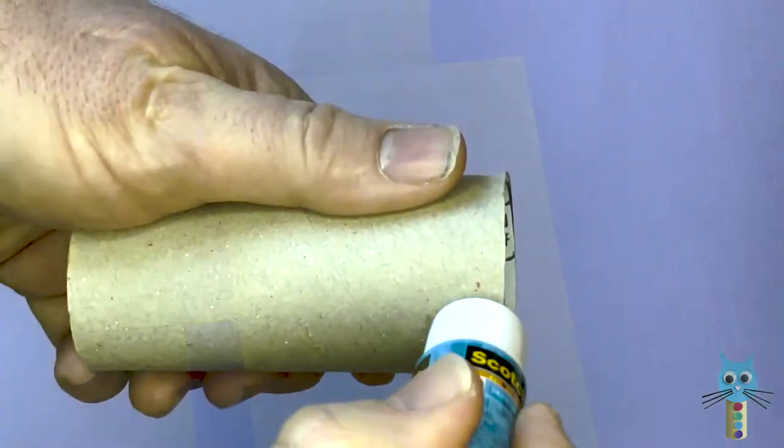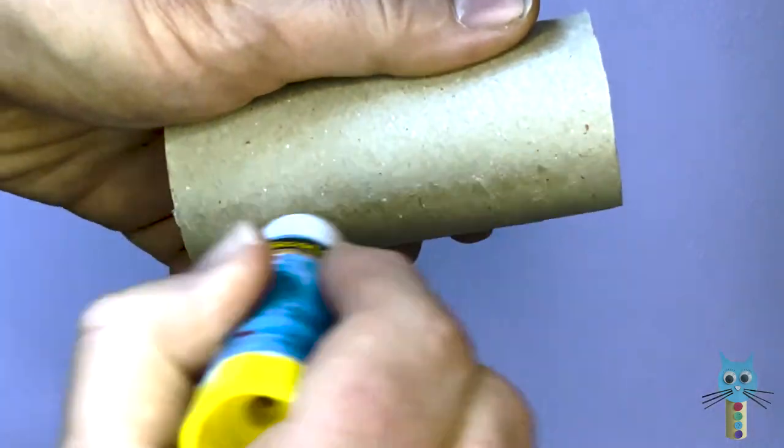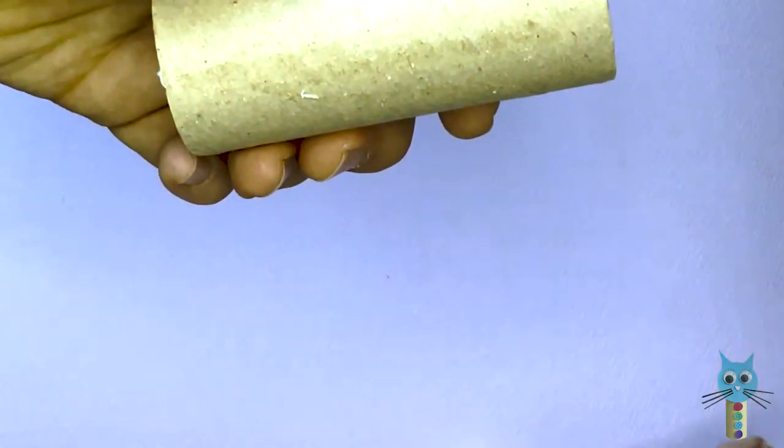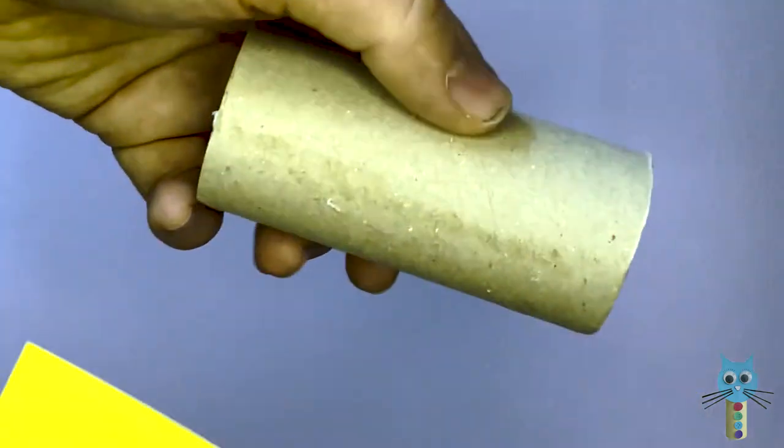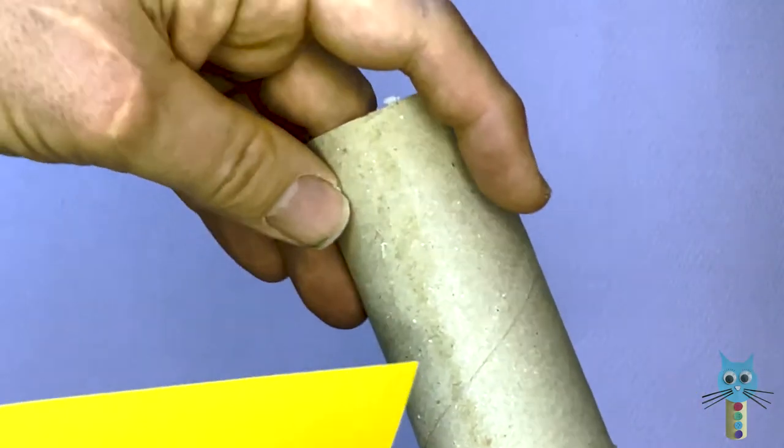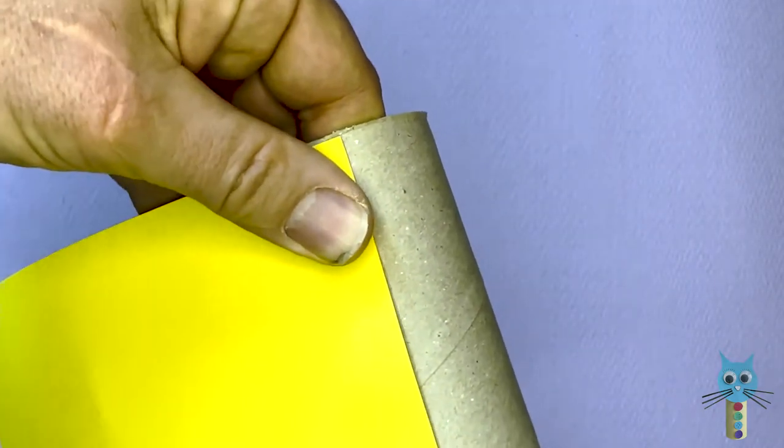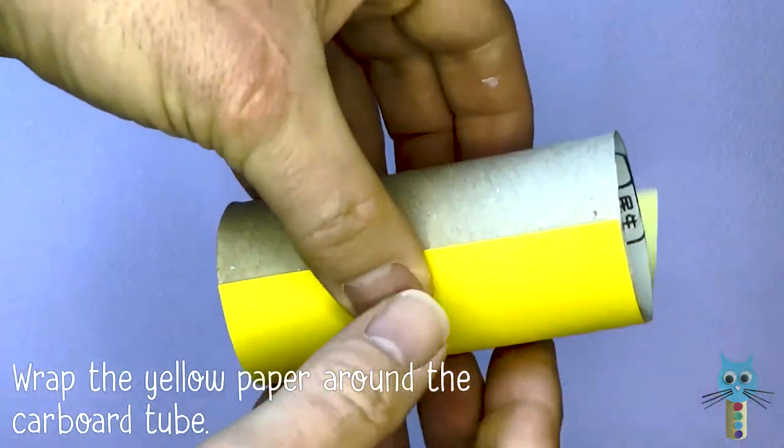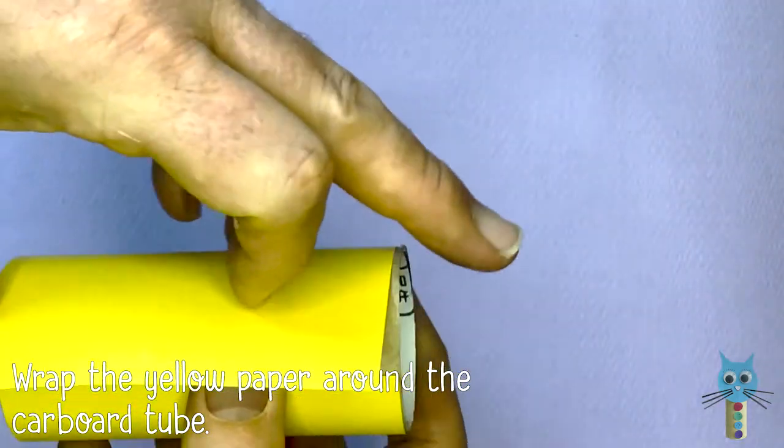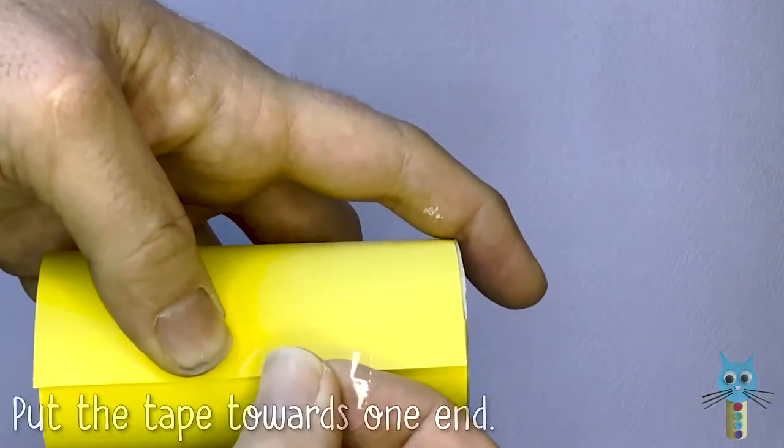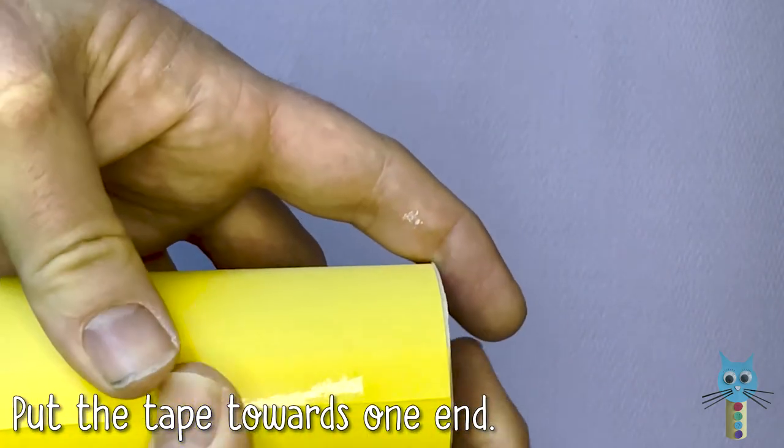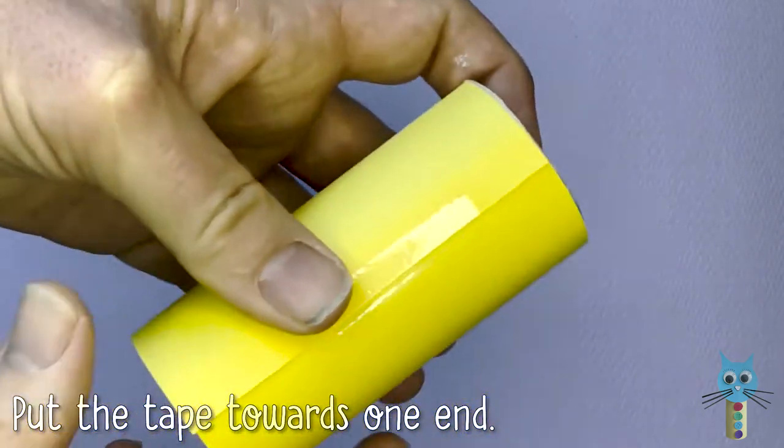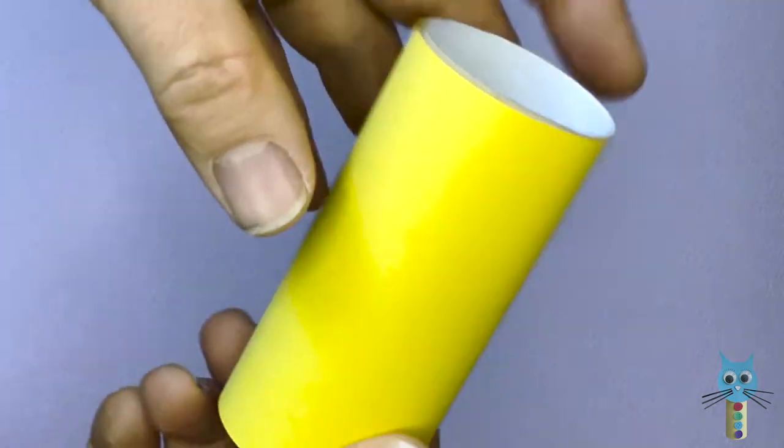There it is. So put some glue along the cardboard tube, and then take that yellow card that's been cut out before, and then stick this along the cardboard tube. Once that is firmly stuck down, wrap it around the cardboard tube. The best thing to do is to use some tape. Put the tape at the top and not at the bottom. You'll see why later.